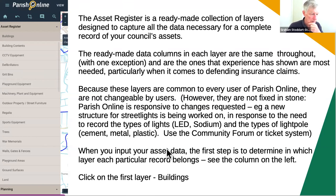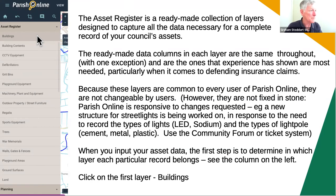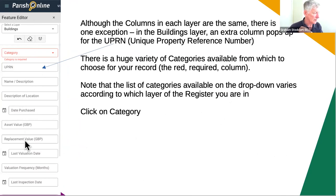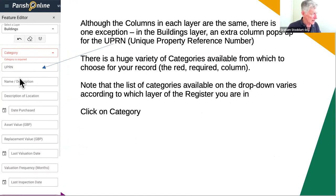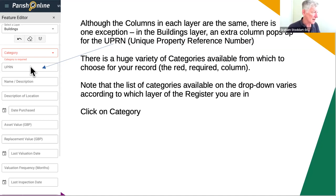When deciding where to put your asset data, click on a layer — for example the Buildings layer — and the feature editor shows all the available fields. Category one is outlined in red, meaning it's mandatory, and it's a drop-down list with many choices. The Buildings layer is the only one containing the UPRN — Unique Property Reference Number — which is recognised by insurance companies, fire departments, and police. Each layer has a completely different category list.